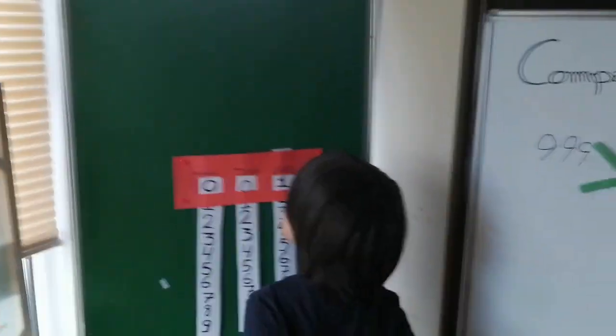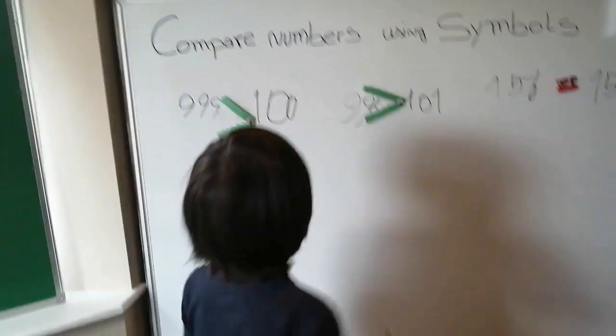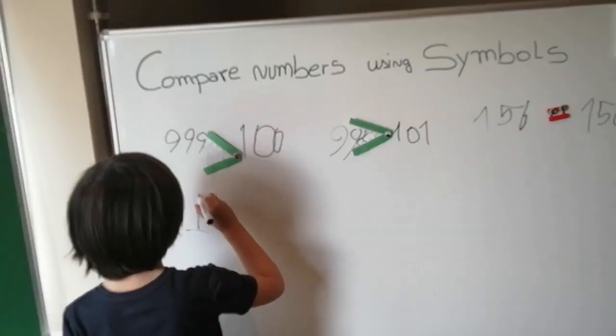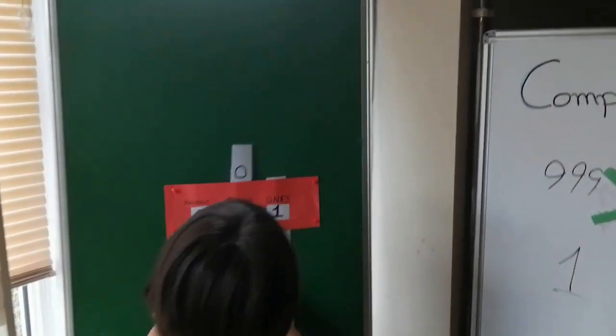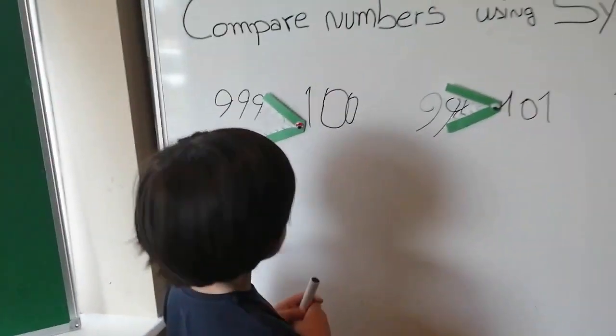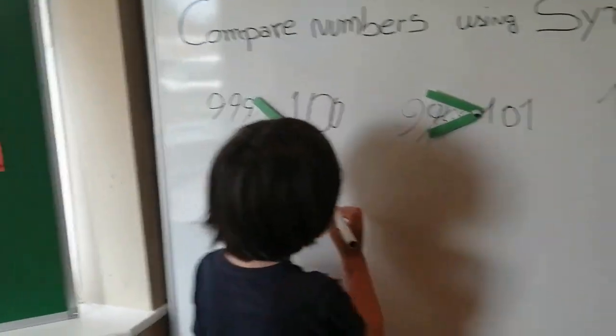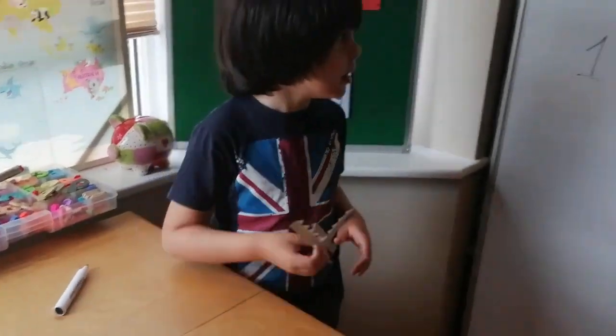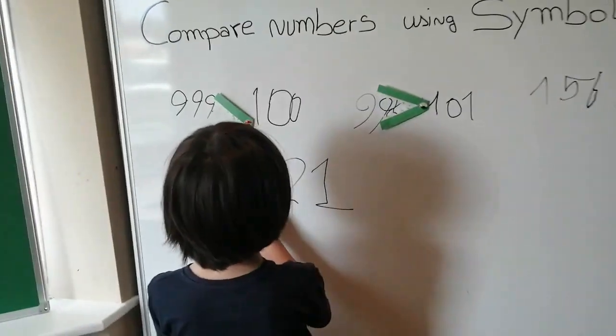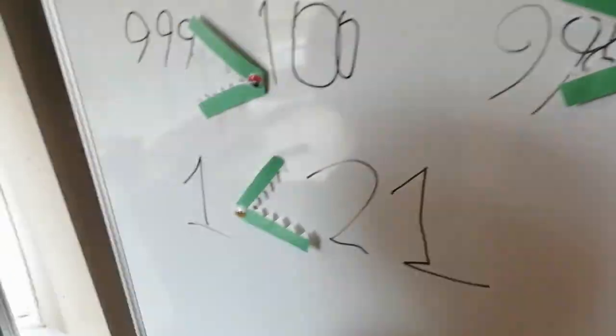One. Okay, put that one then. One, one, one. And the next number is? Twenty-one. Twenty-one. Yep. Okay. Which one is the bigger one? The crocodile always eats the bigger numbers. Oh, very good.